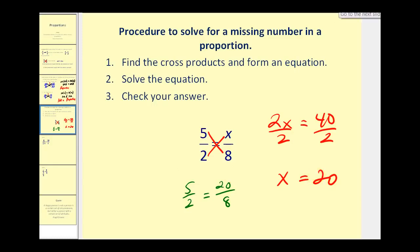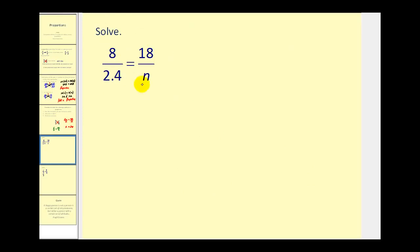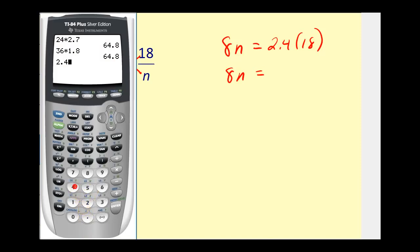Let's go ahead and do a couple more of these. We have a proportion, therefore the cross products must be equal, which means 8 times n or 8n must equal 2.4 times 18. So we'd have 8n equals 43.2.